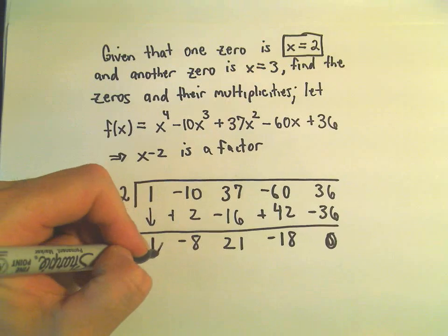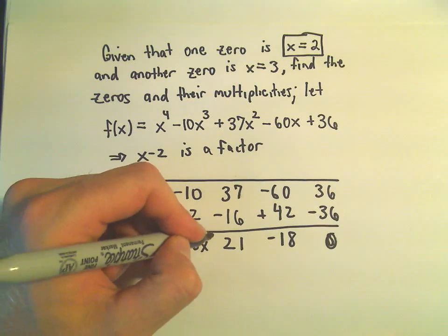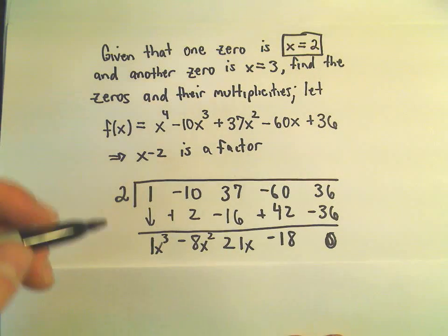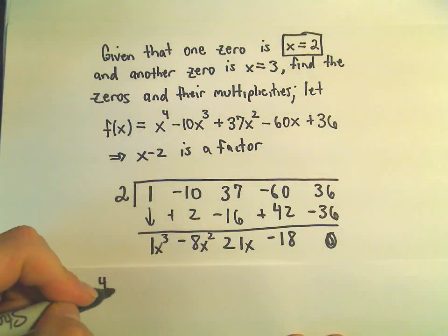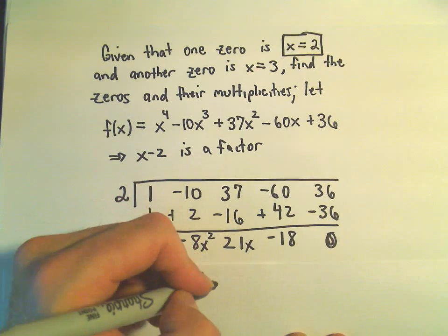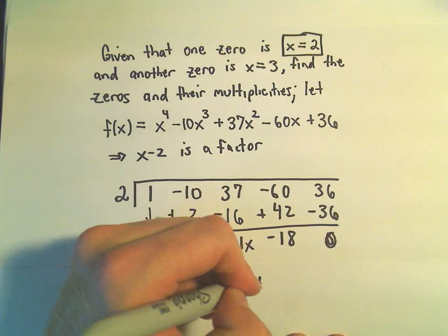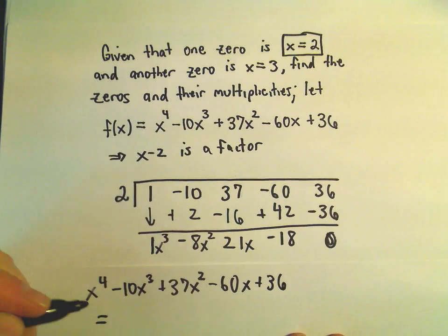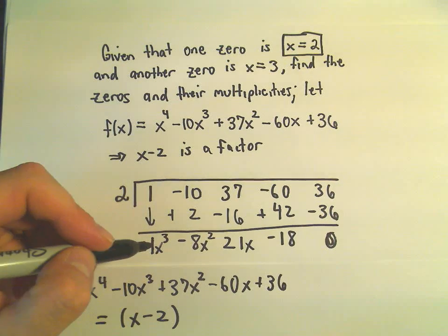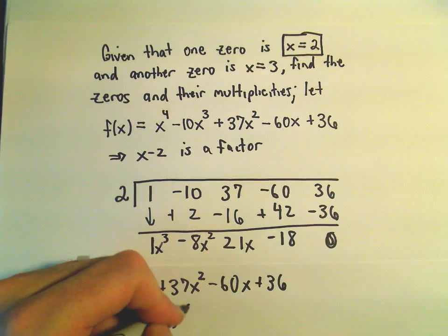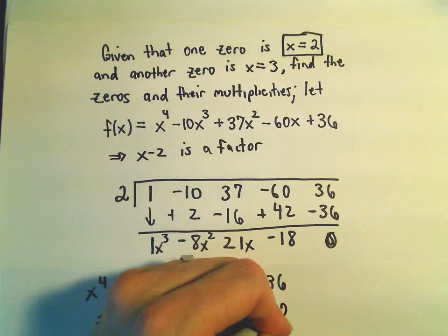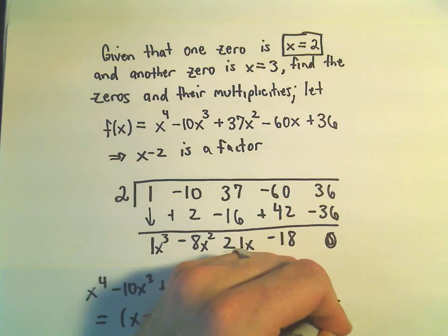We started with x to the fourth. This will be our x cubed term, our x squared term, our x term, and our constant. So what it says is, it says we can write that original polynomial x to the fourth minus 10x cubed plus 37x squared minus 60x plus 36 as the factor x minus 2 times all this stuff we just found. So x cubed minus 8x squared plus 21x minus 18.